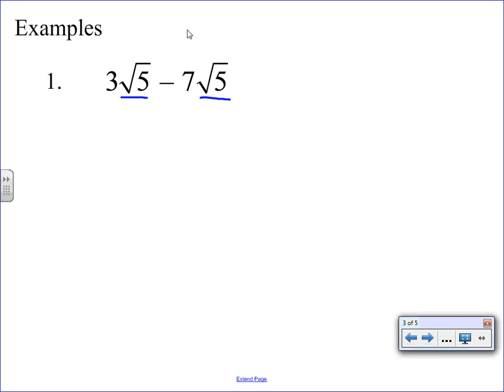And so we can leave them like they are, and we can actually just combine them. And when we combine them, we just look at the coefficients. So it's like I have three square roots of five, and I'm taking seven of them away. So that leaves us with negative four square root of five. And that's all we have to do with this one. That is considered the simplest answer.